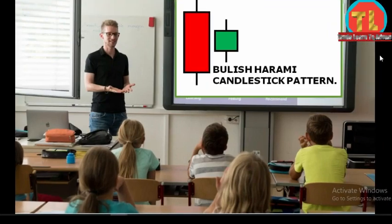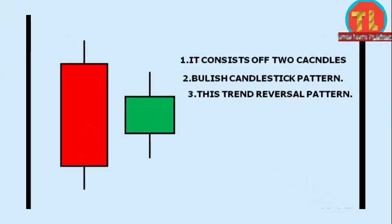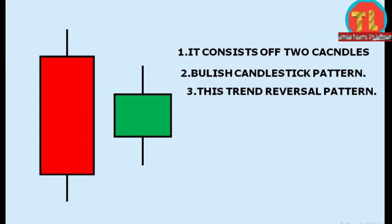Hello friends, welcome. In this video, you will get information about the bullish Harami candlestick pattern. This candlestick pattern consists of two candles: the first candle is red and the second is green.